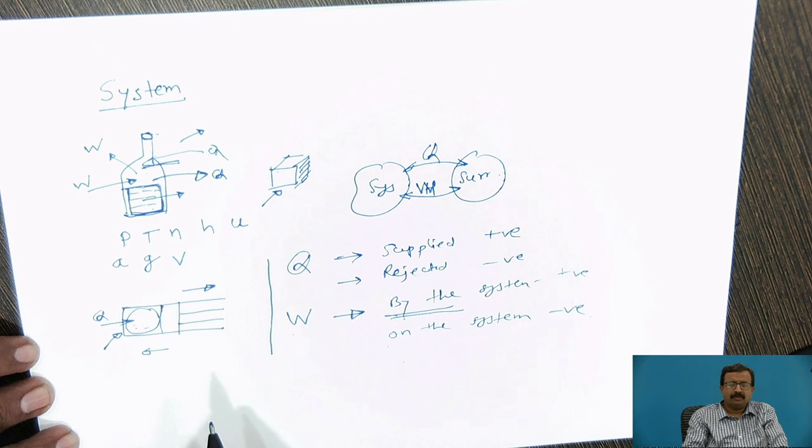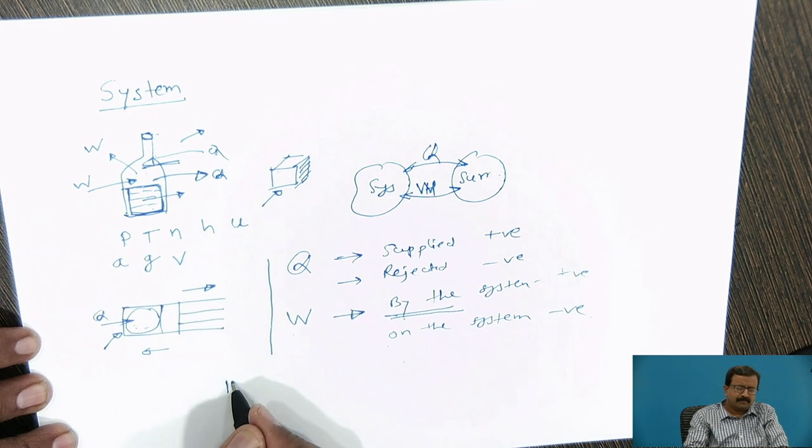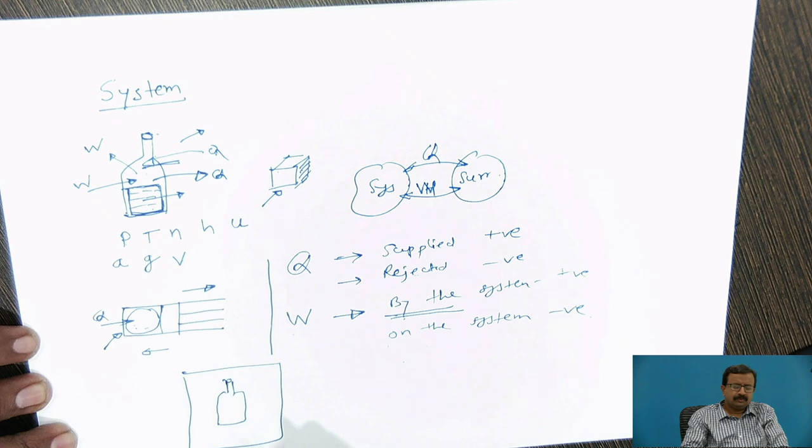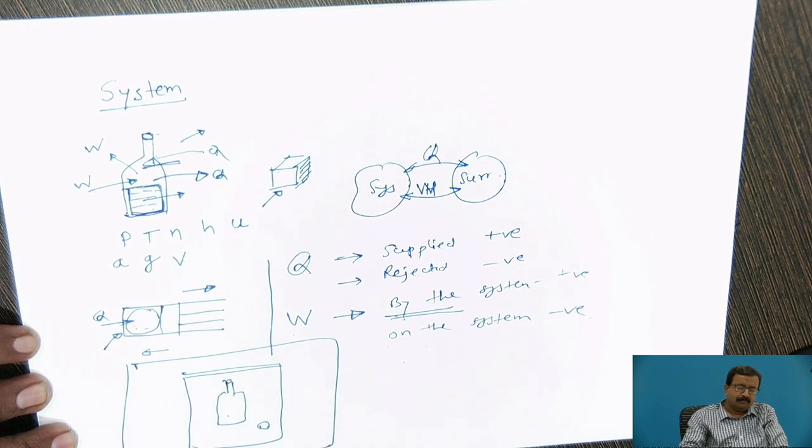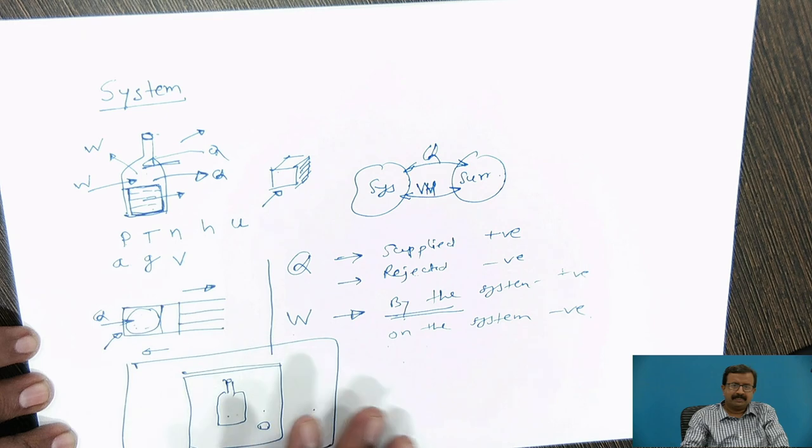But in physics and engineering, we have to be very particular about it. System and surroundings are two well-defined systems. Surrounding is also a system, though it is not appearing like a system. For example, suppose this bottle, if I kept in a small container, for this bottle, this container is a surrounding. But if this container itself is kept in a big room, then for this container as a system, this entire room is a surrounding. Everywhere, surrounding and system are always defined in relation to each other.